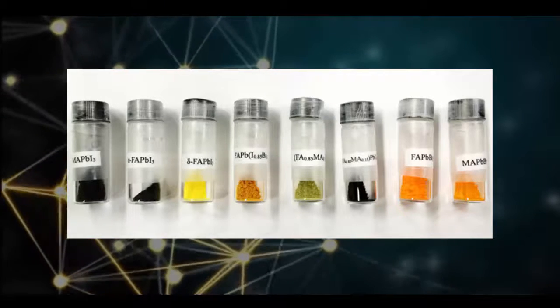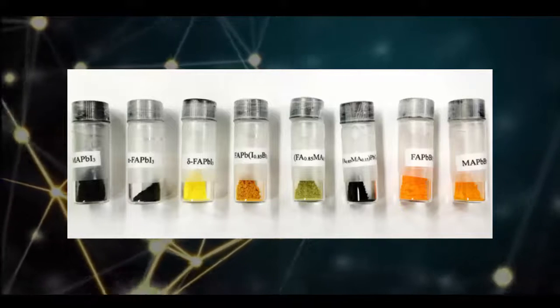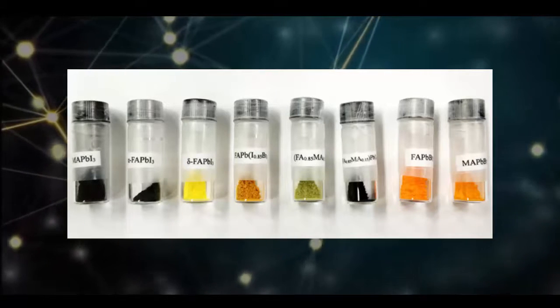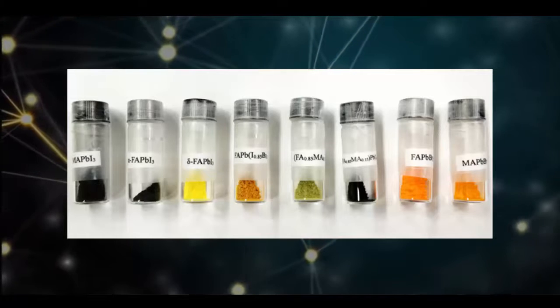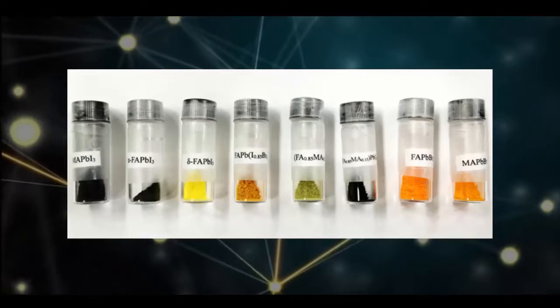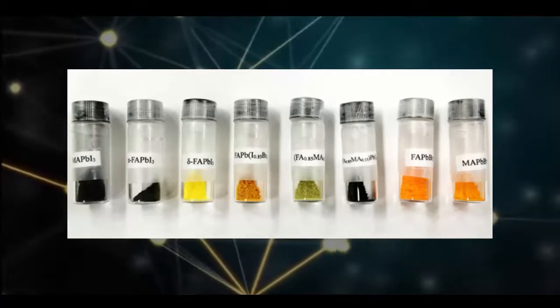Perovskite solar cells have proven to be cheaper and more efficient than traditional silicon solar cells, and their efficiency levels have increased from 3.8% in 2009 to 22.1% in 2016, making them the fastest advancing solar technology to date.